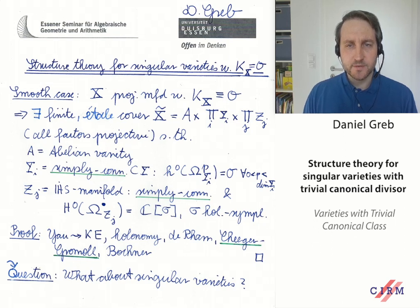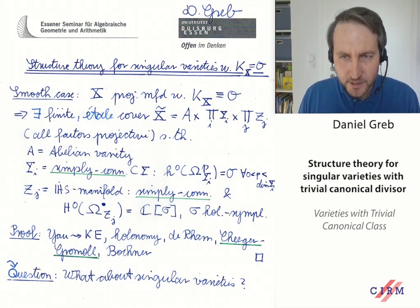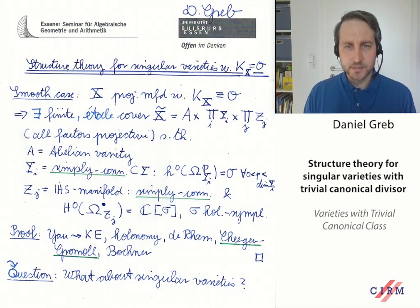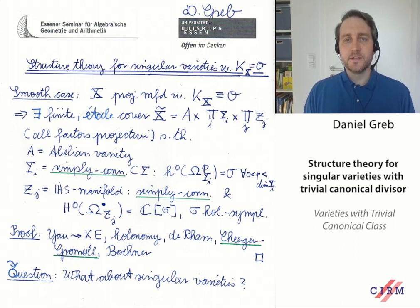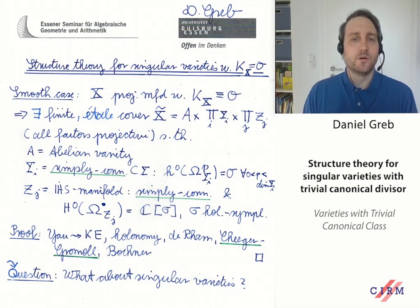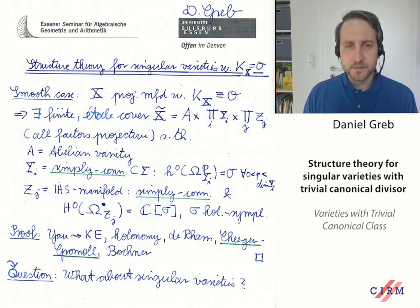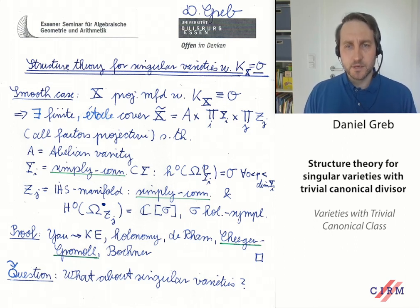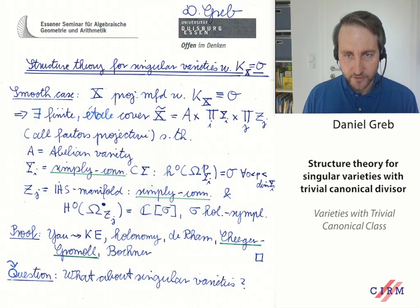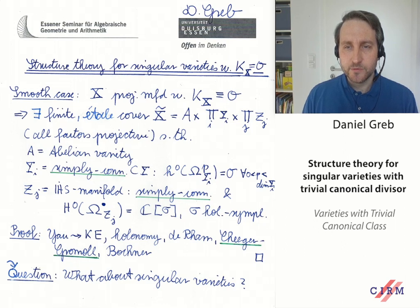Let X be a projective manifold with trivial canonical divisor, or numerically trivial canonical class. Then there exists a finite étale cover, called X-tilde, which splits as A times a product of Y_i's and Z_j's, such that A is an abelian variety, Y_i is a simply connected Calabi-Yau manifold — meaning the canonical divisor is linearly trivial and H^0(Ω^p) is zero for p strictly between zero and the dimension.